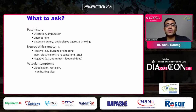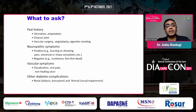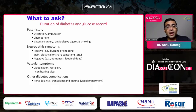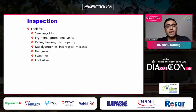You should ask about the history of Charcot joint and any vascular surgery. Ask about neuropathic symptoms — both positive and negative; positive symptoms like burning or shooting pains are more common. Also ask about vascular complications like claudication and rest pain, complications of retinopathy and nephropathy, and always record the duration of diabetes and glucose records meticulously in the patient's file.